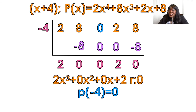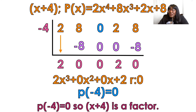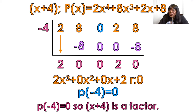What is the remainder? Is it zero? Yes, it is. P of negative 4 equals zero, so x plus 4 is a factor. Make sure that you're remembering with synthetic division and synthetic substitution: for x plus 4, instead of using positive 4, I use negative 4. Also when setting up the problem, put it in descending order — exponents 4, 3, then 2 is missing so put a zero there, then 1, then the constant. The setup of your problem is super important because it'll mess up the rest of your work.